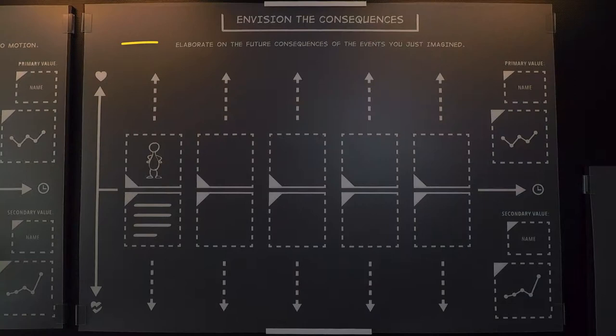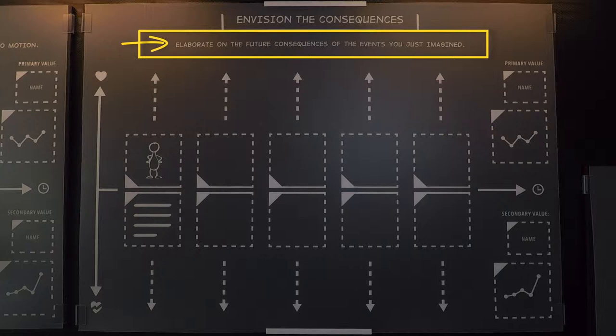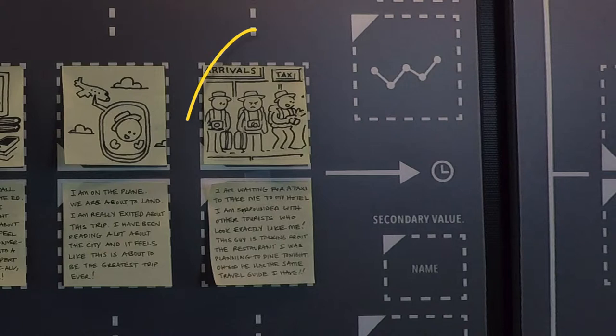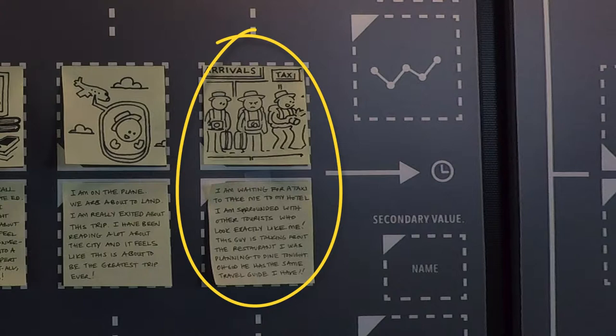In this section, we will add five more frames to elaborate on the consequences of the previous five frames to discuss the impact of the conflict on our main character's experience. Last time we checked, Matt was waiting for a taxi in front of the airport and other tourists made him feel ordinary and insignificant.